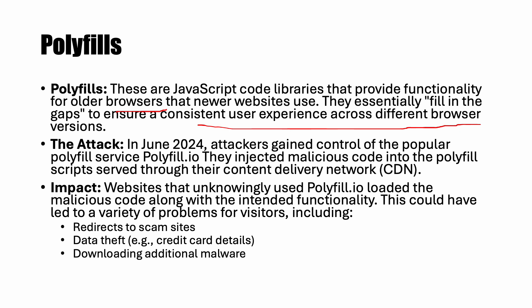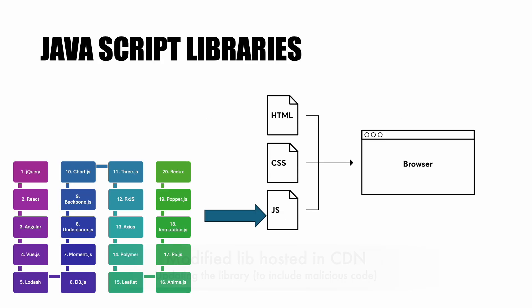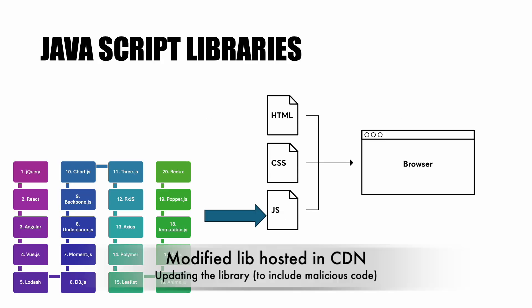In June 2024, attackers gained control of the popular polyfill service polyfill.io. They injected malicious code into the polyfill scripts and served them through their content delivery network (CDN). The impact was significant: it led to users being redirected to scam sites, data theft, and downloading of malware onto user devices.